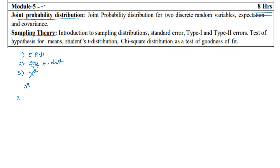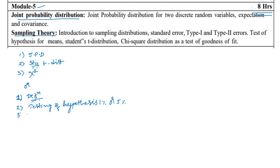For the next question you can have chi-square distribution. In the option, the first problem will be a definition — definition is very important. The second question will be on testing of hypothesis for 1% or 5% level. The last question will be chi-square on binomial distribution or Poisson distribution — you should reduce the problem from binomial distribution to chi-square distribution to get the expected value and observed value.